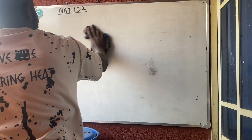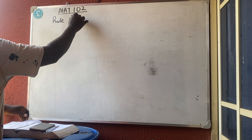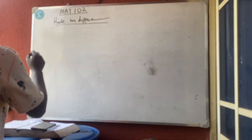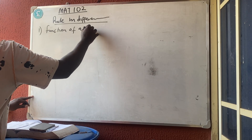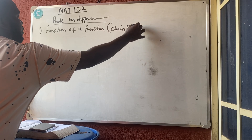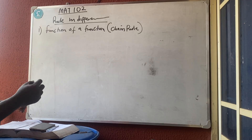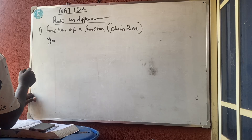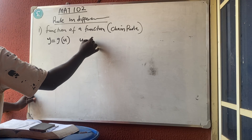Now let's go into the rules governing differentiation. Rule 1 is 'function of a function,' also known as the chain rule. The chain rule says: if y is a function of u and u is a function of x, then we need to find dy/dx.